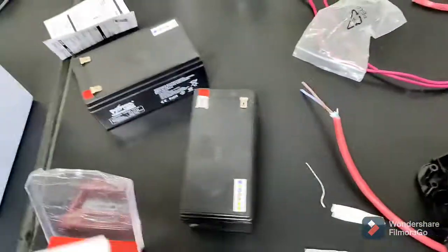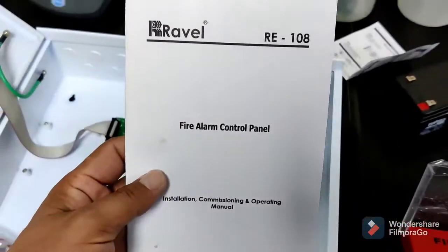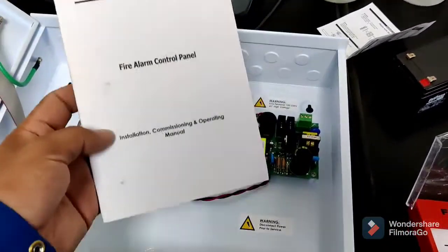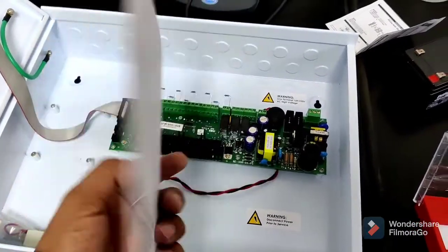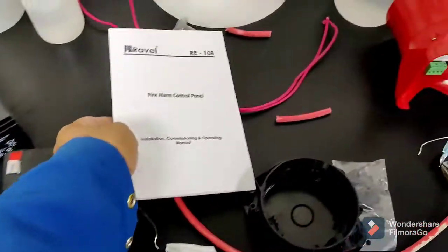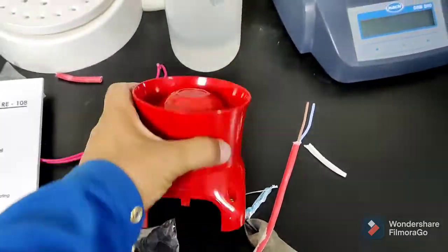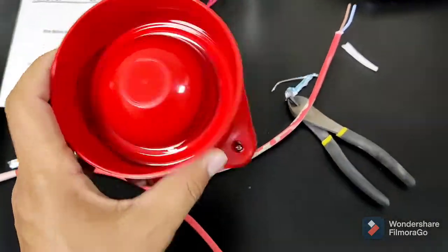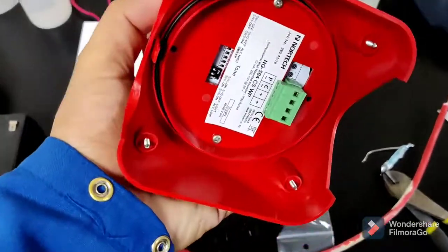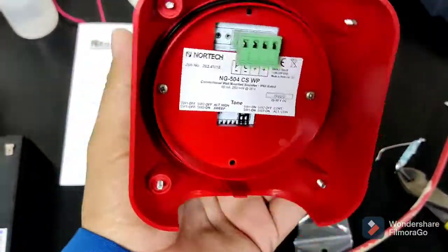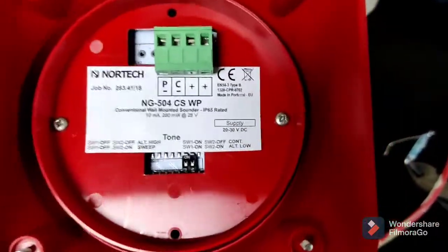We need to connect the sounder. I will show you the manual for this fire alarm panel. You can see everything here inside, very easy installation work. Look at the sounder. The sounder we install outside but I'm just trying to show you how to install and how to connect everything here.